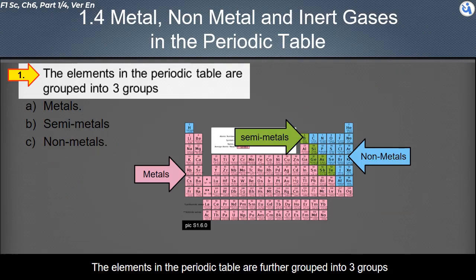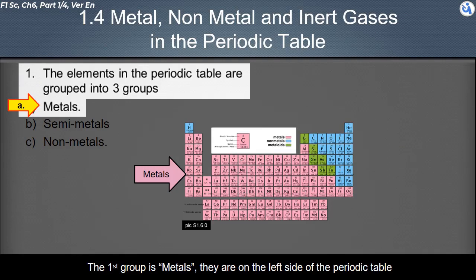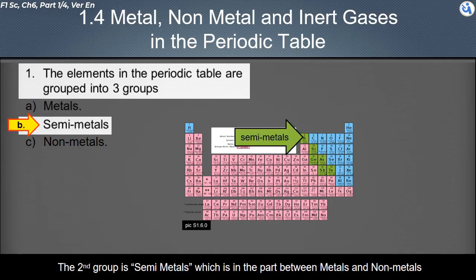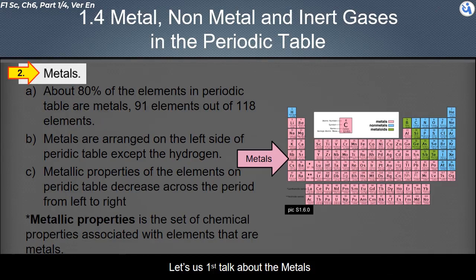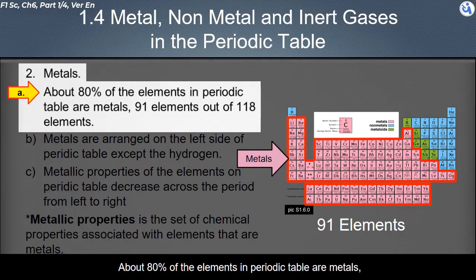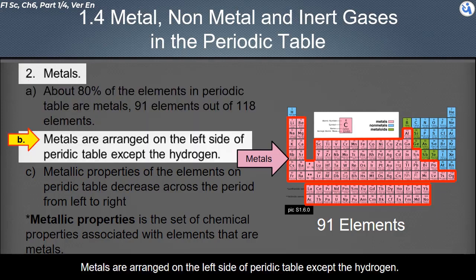The elements in the periodic table are grouped into three groups. The first group is metals, located on the left side of the periodic table. The second group is semi-metals, located in the region between metals and non-metals. The third group is non-metals, located on the right side of the periodic table. About 80 percent of the elements — 91 out of 118 — are metals, arranged on the left side of the periodic table, except for hydrogen.